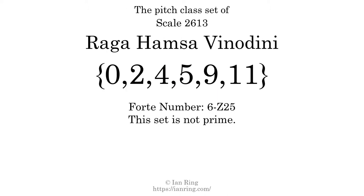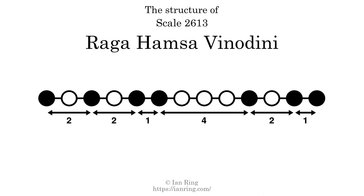The pitch class set for this scale is 0, 2, 4, 5, 9, 11. The fourth class is 6z25. This set is not prime. The structure of a scale is a description of the interval distance between each successive tone. This scale has a structure of 221421.